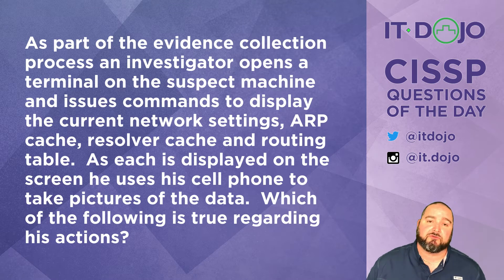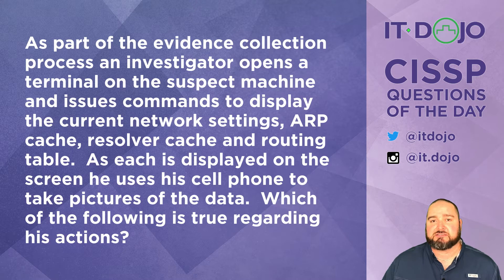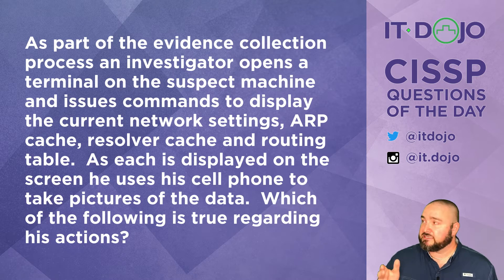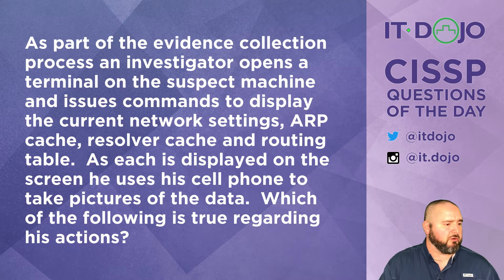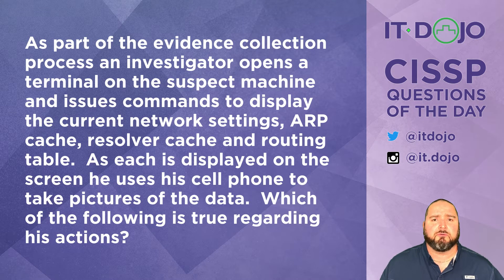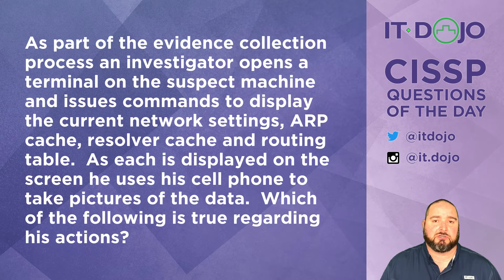Question number one today comes from the world of computer forensics. As part of the evidence collection process, a forensics investigator opens a terminal on a suspect system and uses that terminal to issue commands to determine the contents of the routing table, the process table, the ARP cache, and the resolver cache. He then uses his cell phone to take pictures of the output displayed on the screen. The question is: what is a result of those actions that the investigator took?